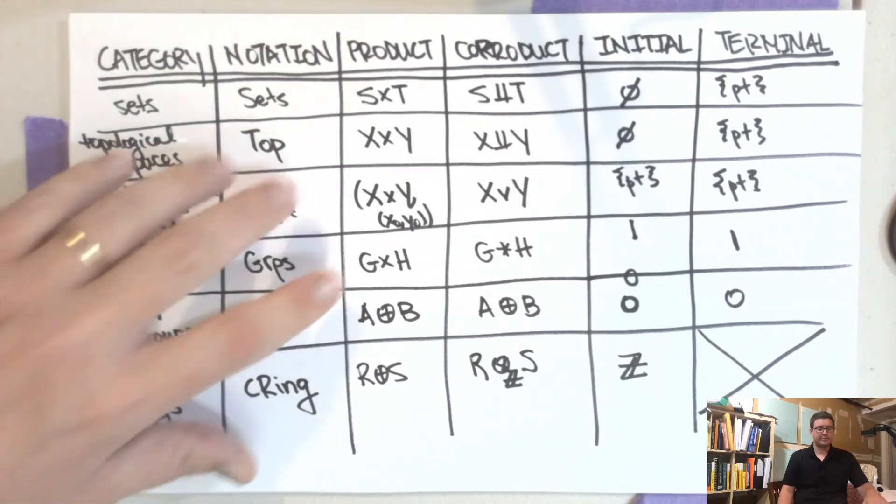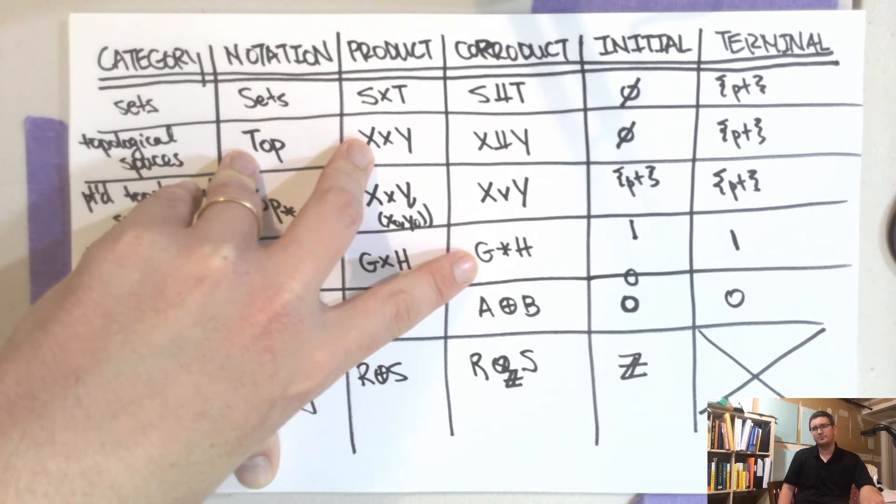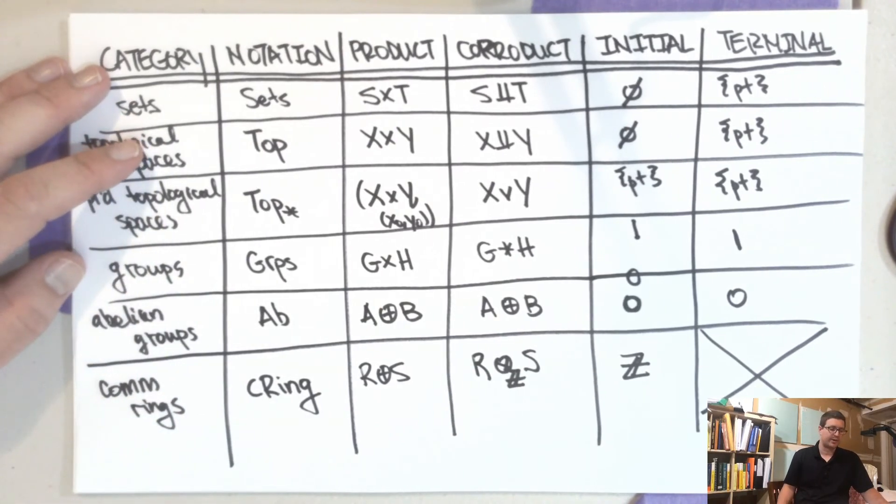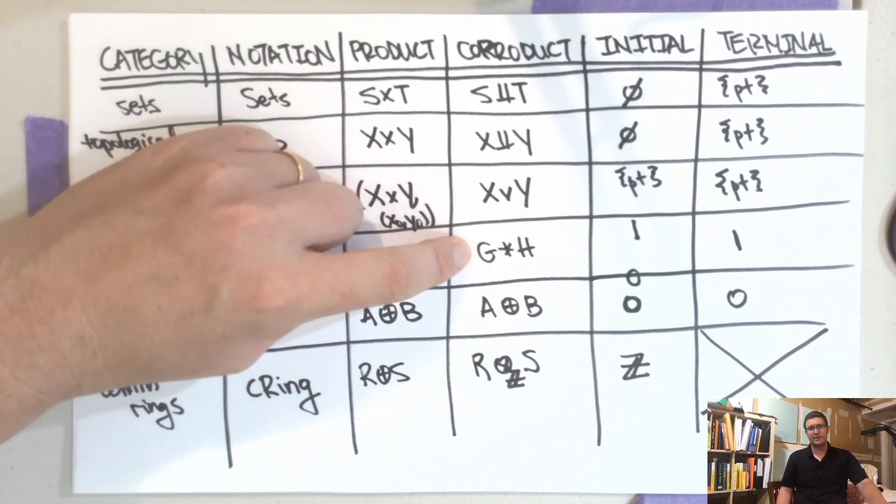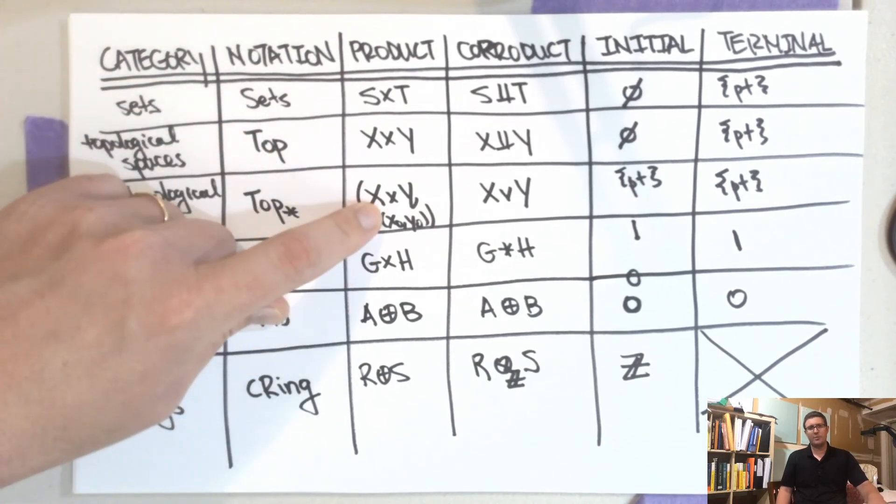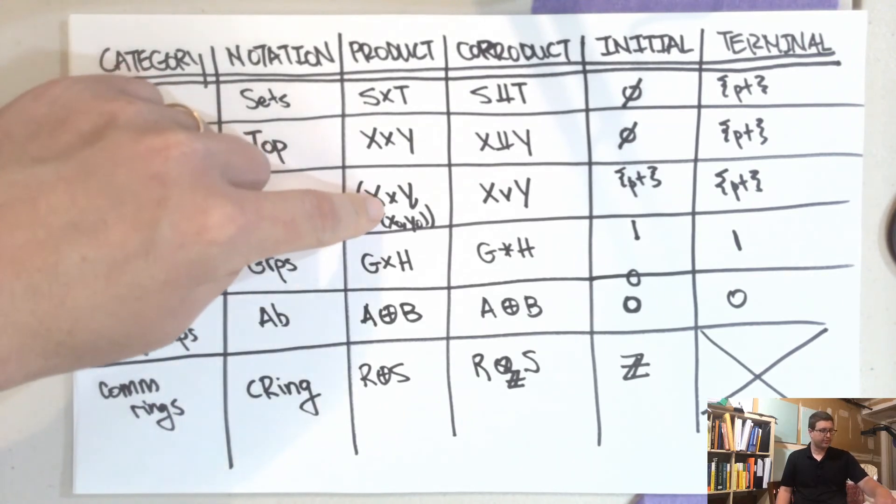The category of groups has a product. The co-product in the category of groups is the free product of the two groups. So this is the group where you just take all the symbols, where you take symbols from G and symbols from H and just kind of like put them next to each other, and then declare a group that way. And that's called the free product. And that turns out to be the co-product in the category of groups. This will come up later when these two things are related, and these two things are related because when we look at there's going to be a functor from this category to groups called the fundamental group.